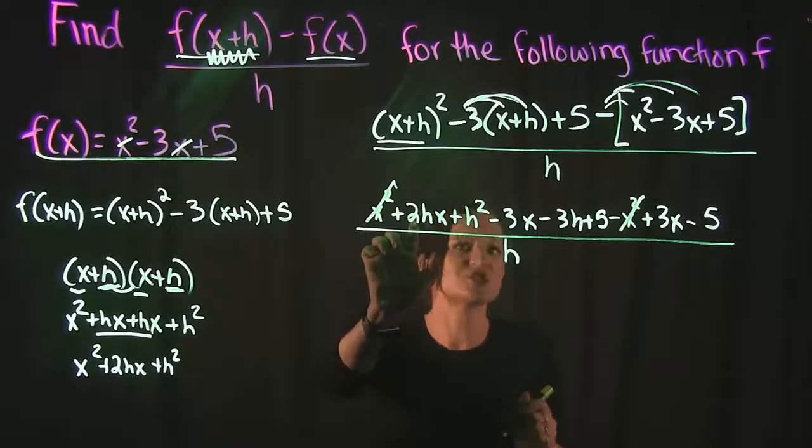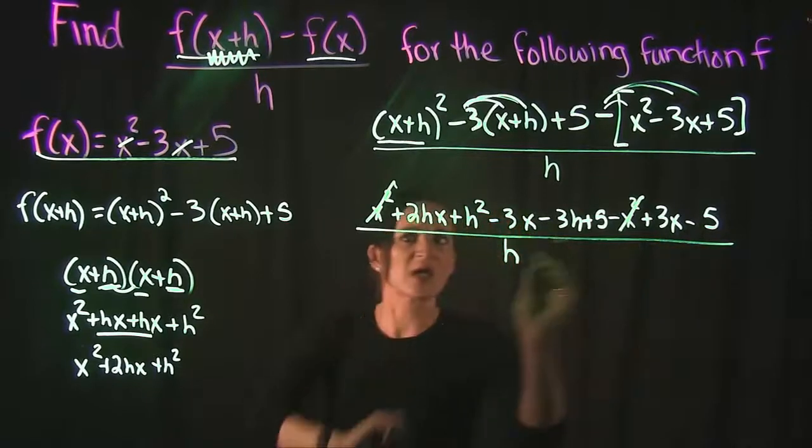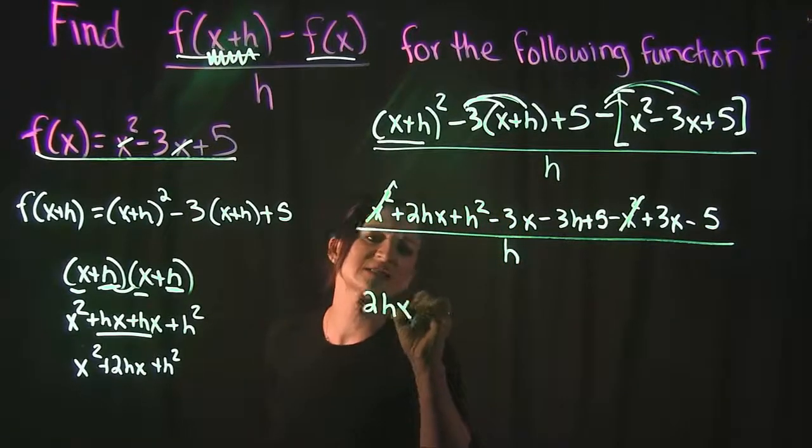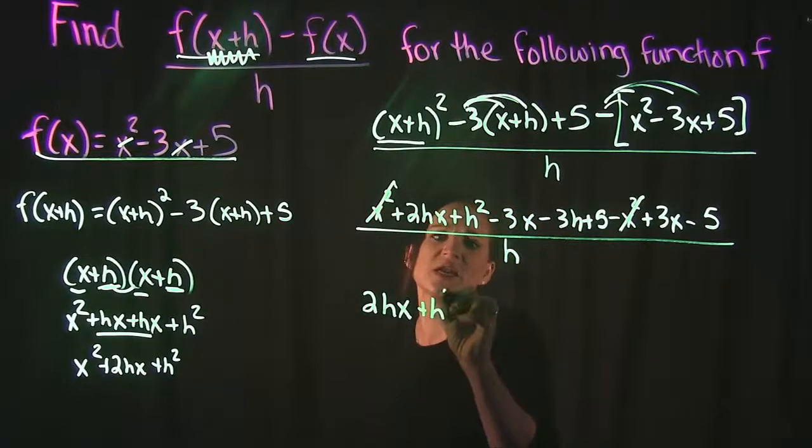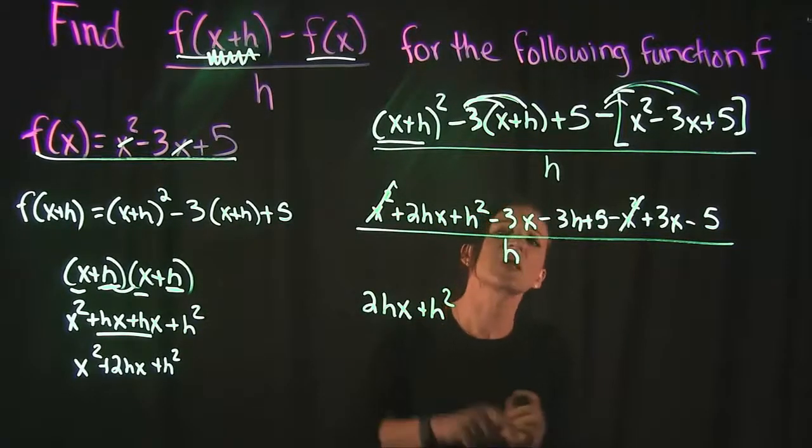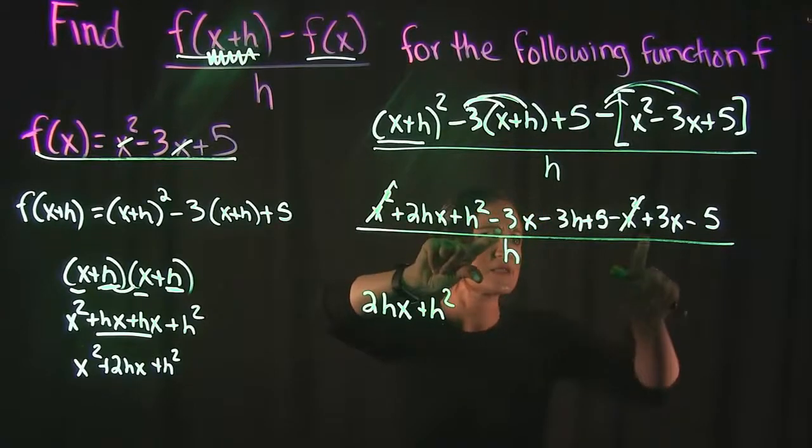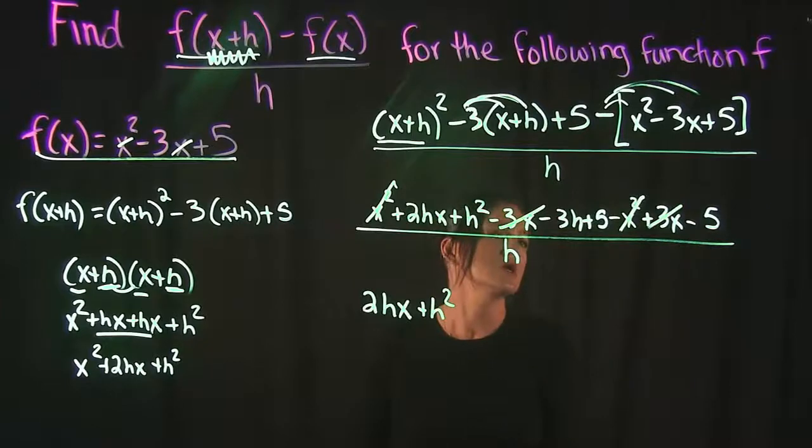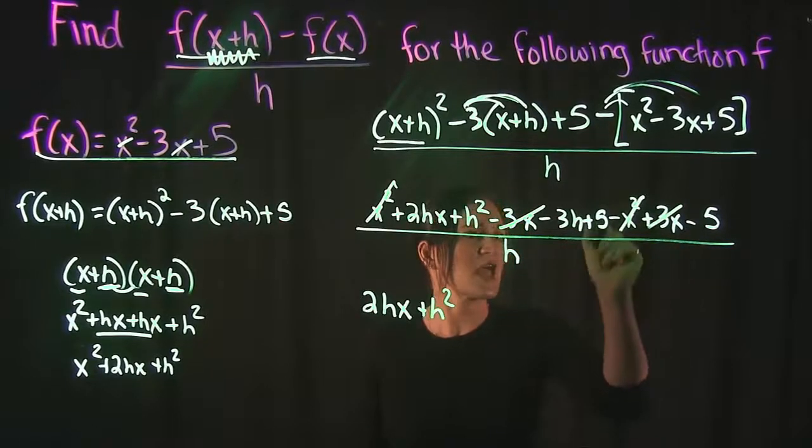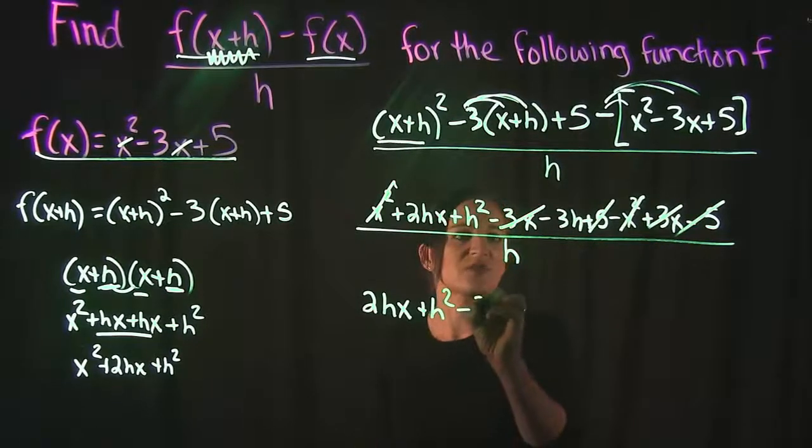I have a 2hx. I don't think I have anything else like that, so that's going to stay. Here I have an h squared. I don't see anything else with an h squared, so that stays. I have a negative 3x, and I see here I have a positive 3x, so those are going to cancel.